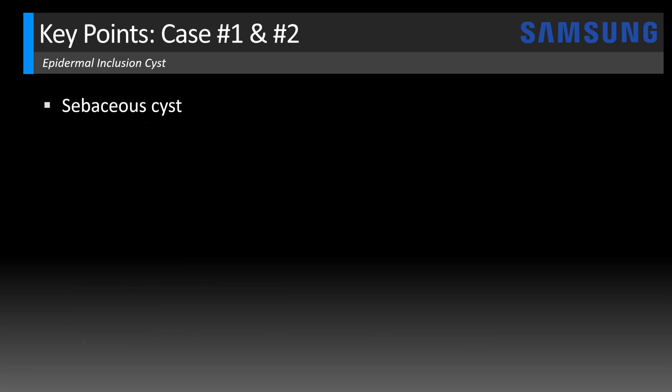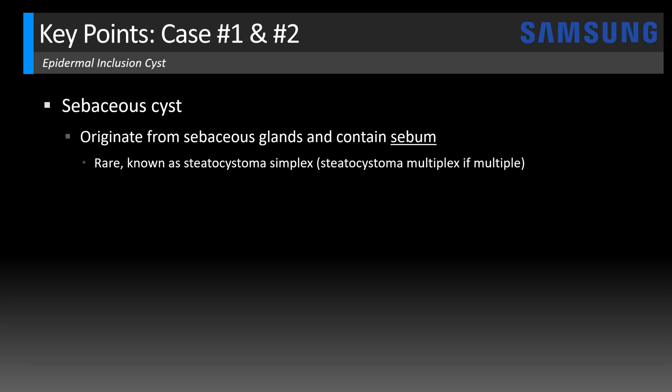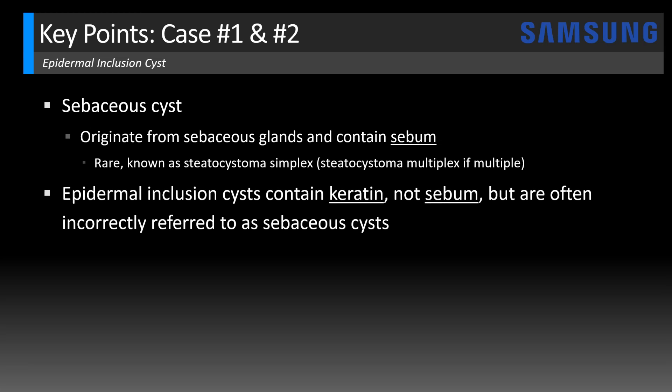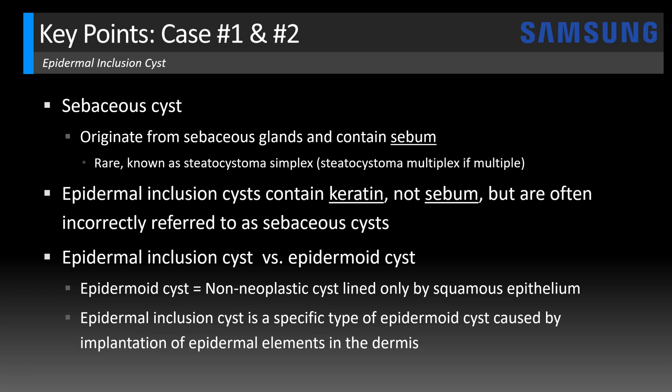On terminology: these are not sebaceous cysts. Sebaceous cysts originate from sebaceous glands and contain sebum; they are actually uncommon and known as steatocystoma simplex — or steatocystoma multiplex when multiple. Epidermal inclusion cysts contain keratin, not sebum, but are often incorrectly referred to as sebaceous cysts. Regarding epidermal inclusion cysts versus epidermoid cysts: an epidermoid cyst is a non-neoplastic cyst lined only by squamous epithelium, and an epidermal inclusion cyst is a specific type caused by implantation of epidermal elements in the dermis. So all epidermal inclusion cysts are epidermoid cysts, but not all epidermoid cysts are epidermal inclusion cysts. Epidermoid cysts are described by anatomic location — splenic or testicular epidermoid cysts are different — but lesions in the skin are more specifically described as epidermal inclusion cysts.